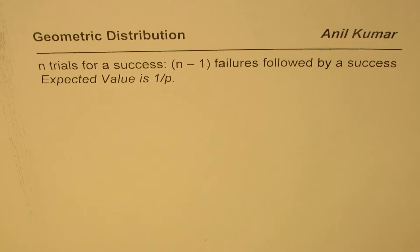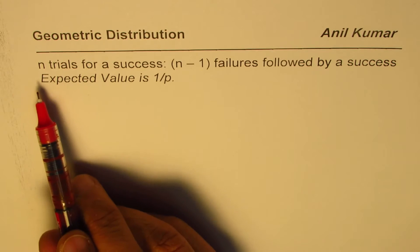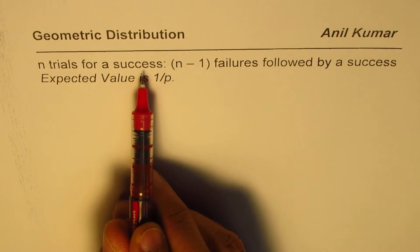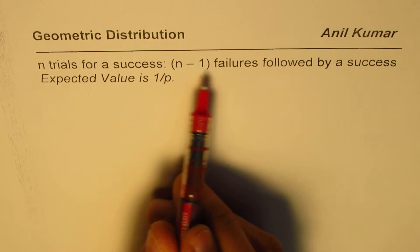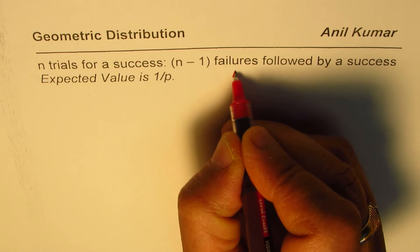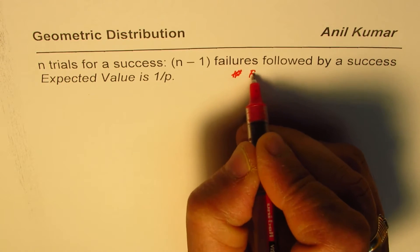I'm Adil Kumar. In this video we will derive an expression for expected value of geometric distribution. In geometric distribution, we'll have n trials for a success - that means the nth trial is a success and all the trials before that, n minus 1 trials, were failures. So it is a series where we are considering failures, failures...